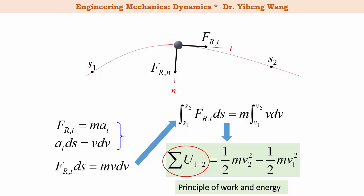You might ask: what happened to the force along the normal direction? Since work is defined as the magnitude of the force multiplied by the displacement along its direction, and since the normal force is always perpendicular to the path, there is never any displacement along the direction of the normal force. Therefore, the normal force never does work. The left-hand side, the summation U_{1→2}, is the total work done to this particle by all external forces during the process from position one to position two.